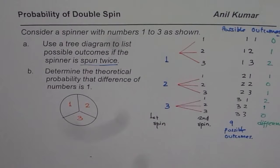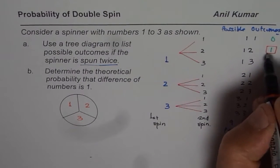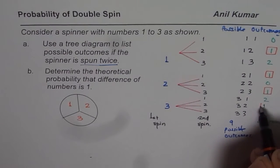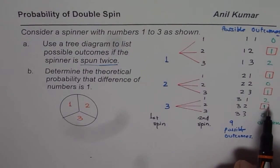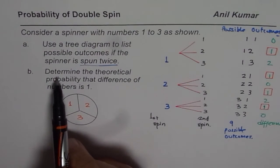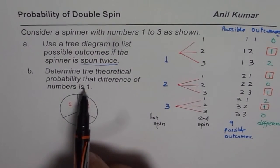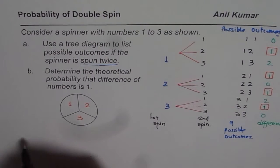Now in this, how many times do you get difference of 1? Let me highlight those. So 4 times we get difference of 1. Now the question is, determine the theoretical probability that difference of numbers is 1. So favorable outcomes are 1, 2, 3, 4.